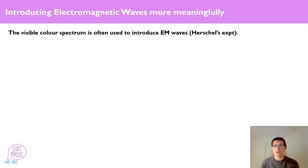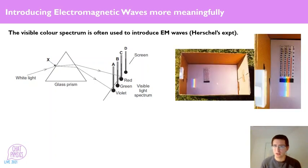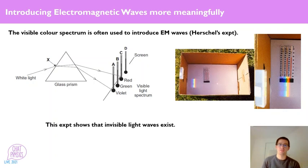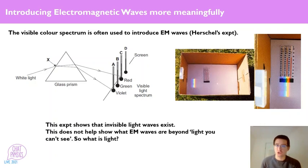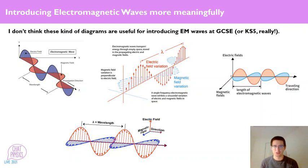Sometimes the visible colour spectrum is used to introduce electromagnetic waves. Herschel's experiment, where thermometer D is outside the spectrum and shows the highest temperature, can give quite nice results. But this experiment really only shows that invisible light waves — infrared waves — exist. It doesn't help students understand what electromagnetic waves are beyond light that you can't see. And these standard electromagnetic wave diagrams — I don't think they're helpful. They're too complicated, need too much unpacking, they're on a 3D graph which will be confusing, and the arrows showing electric field variation take a lot of unpacking. I think there's a simpler way.